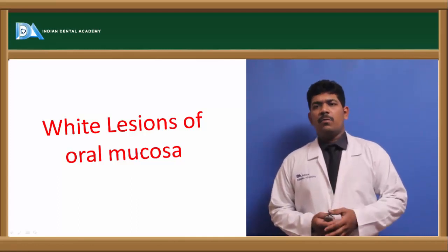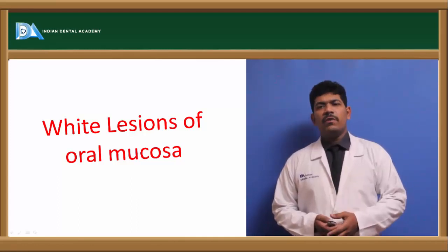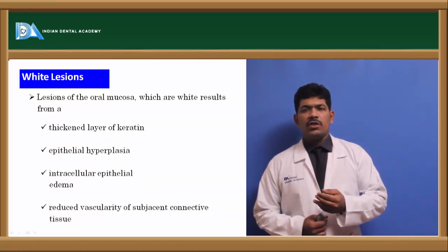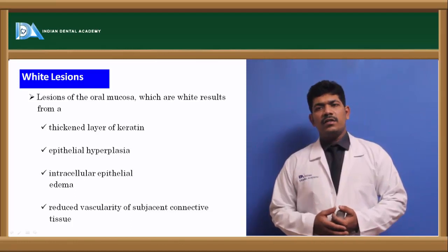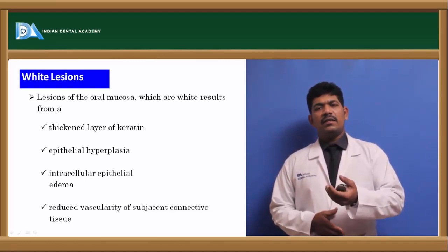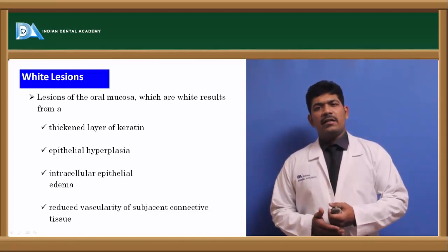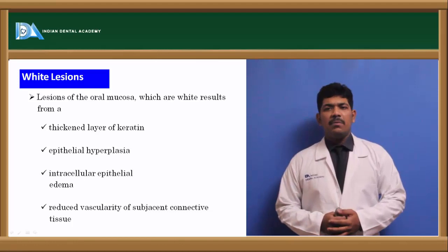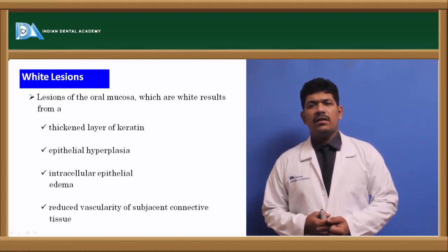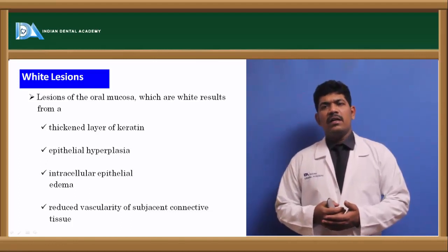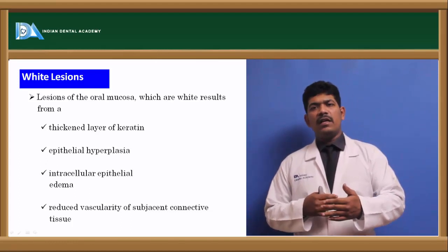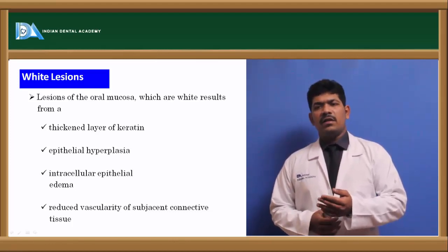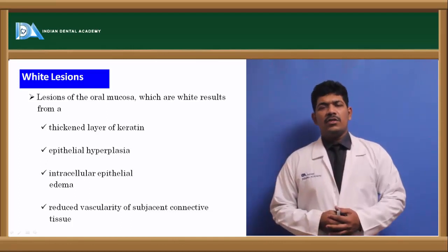Why do we get white lesions in the oral mucosa? The first and most important reason is the increase in the number of layers of keratin, which is the topmost layer. As you know, the keratin layer is a dead layer without any nucleus, and that increase in the number of layers of keratin gives rise to the white appearance of this particular lesion. The second reason would be epithelial hyperplasia — any particular etiology which increases the number of layers of the epithelium will give rise to a whitish appearance, classified as white lesions of the oral mucosa.